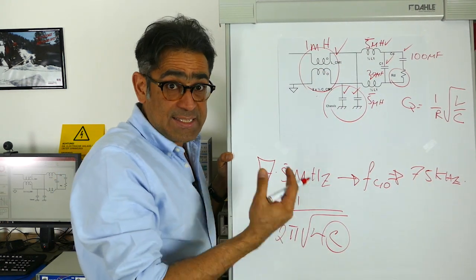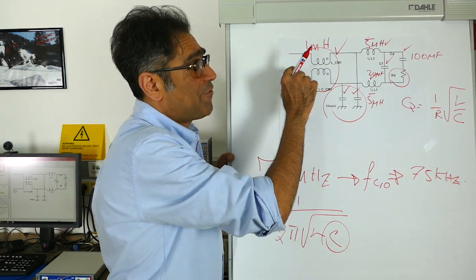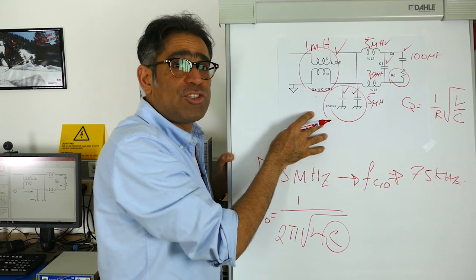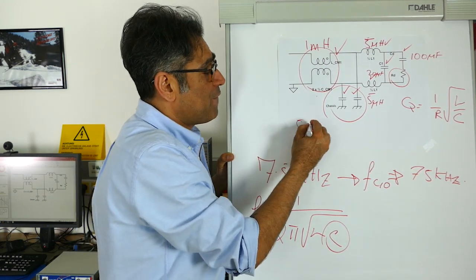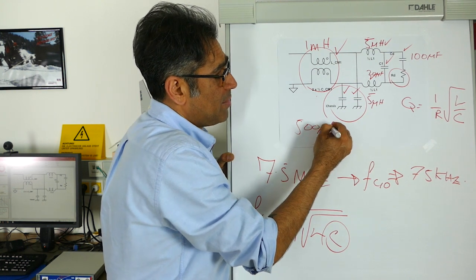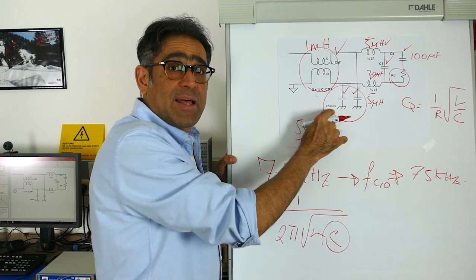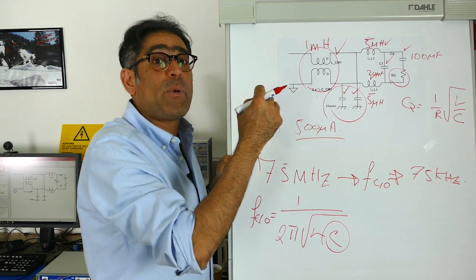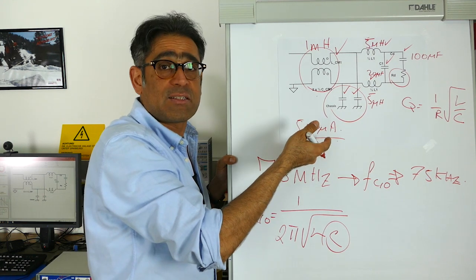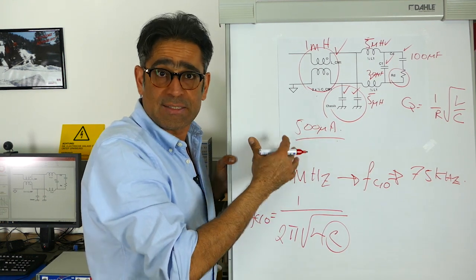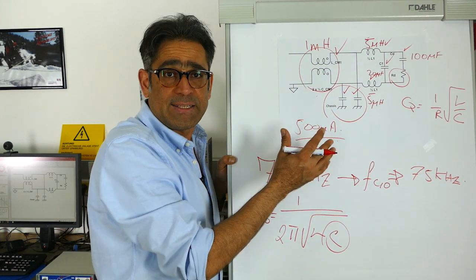In the case of AC line filters, there is an extra requirement because the leakage current from your line and neutral down to chassis is limited. Depending on the standard, this could be, for example, 500 microamps. In that case, you calculate the size of the capacitors based on how much current will flow through them to chassis, and you cannot exceed that limit. This gives you a second way of calculating and ensuring that the capacitor values do not violate any of the safety criteria.